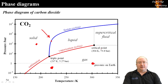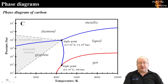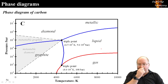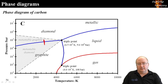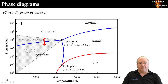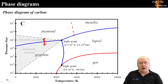Phase diagrams get more complicated as you study further. There is only ever one gaseous and one liquid state, but there can be multiple solid states. Carbon, for example, has three known solid states: graphite, diamond, and metallic. The graphite-diamond transition line is well defined and well studied, but the diamond-metallic boundary is not well studied and its associated triple point is uncertain.